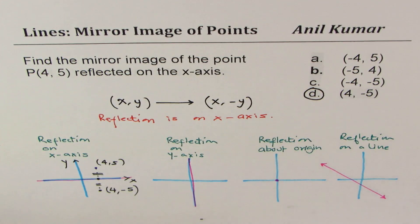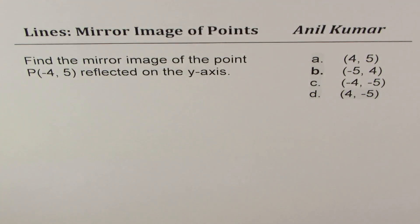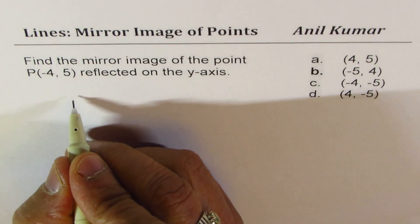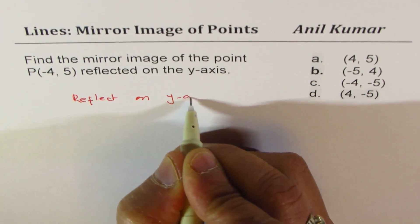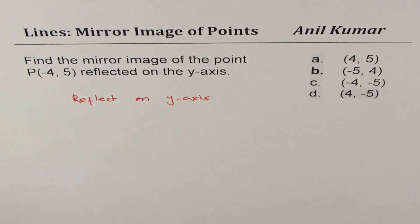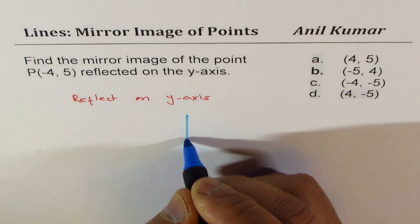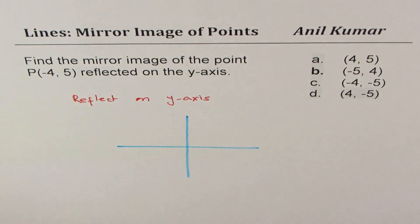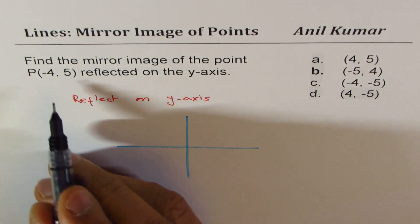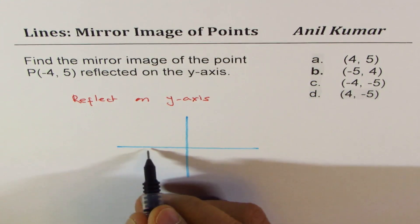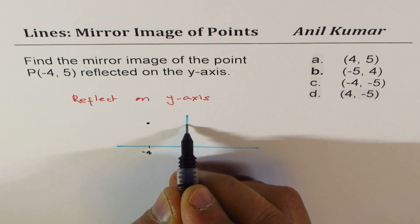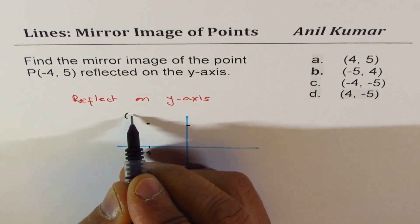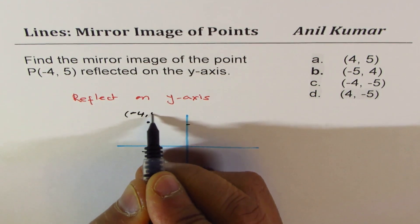Now let's take the second case — reflection on the y-axis. Let's make a bigger coordinate plane here. We are talking about a point which is (-4, 5), so that means somewhere here at minus 4, then 5 up. So this point is (-4, 5).